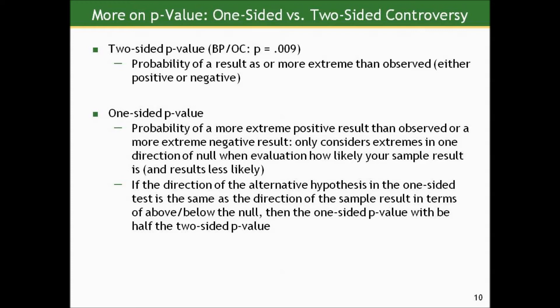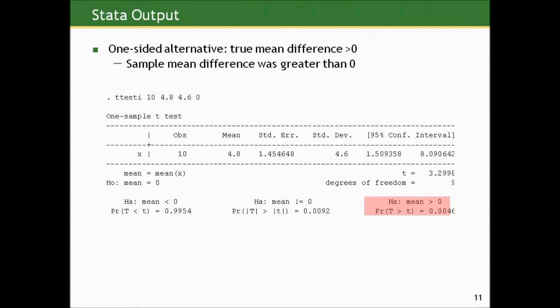Here's an example from the Stata output when we did the t-test for the blood pressure oral contraceptive study. The one-sided alternative that the true mean difference — after oral contraceptive minus before — at the population level is greater than zero is a one-sided alternative. We're only considering possibilities in a positive direction. Our sample mean difference was also greater than zero, so the p-value associated with that is 0.0046, half of that two-sided p-value, because we're only considering extremes in one direction. If instead we had postulated that the true mean was negative — that blood pressure tended to decrease — then the p-value would be the complement, and it would be very high: 0.9954.